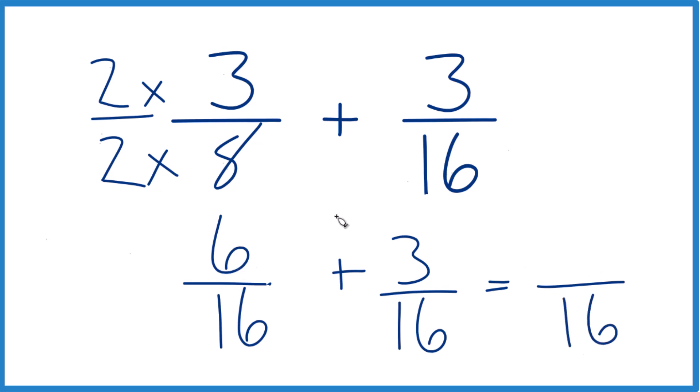And when we add fractions, we add the numerators. 6 plus 3 is 9, and we end up with 3 eighths plus 3 sixteenths, that equals 9 sixteenths.